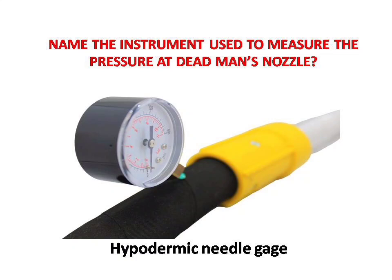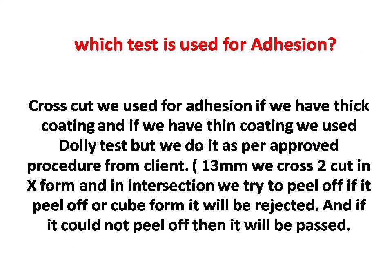Next question: which test is used for adhesion? Answer is: cross cut is used for adhesion if we have thick coating, and if we have thin coating we use the Dolly test, but we do it as per the approved procedure from the client. We make a 13-millimeter X-form cross cut and at the intersection we try to peel off — if it peels off it will be rejected, and if it cannot be peeled off then it will be passed.